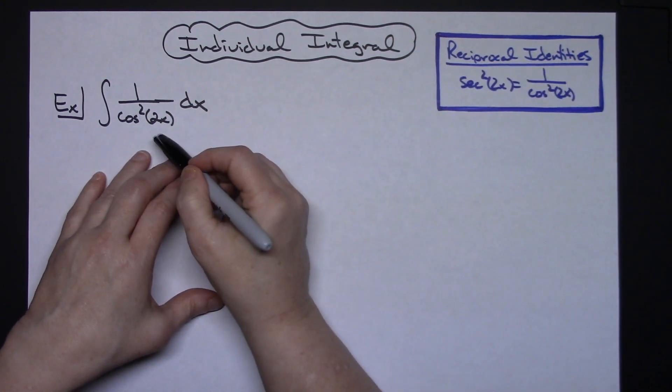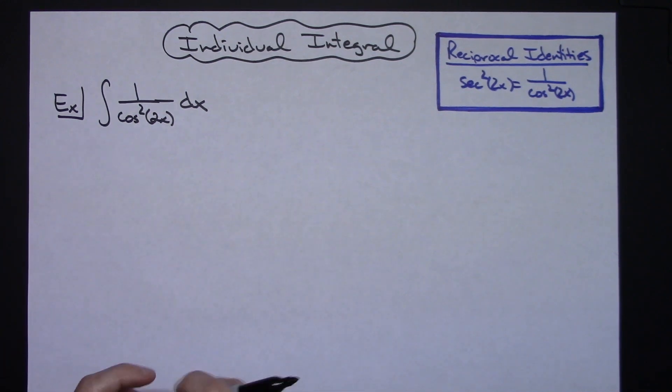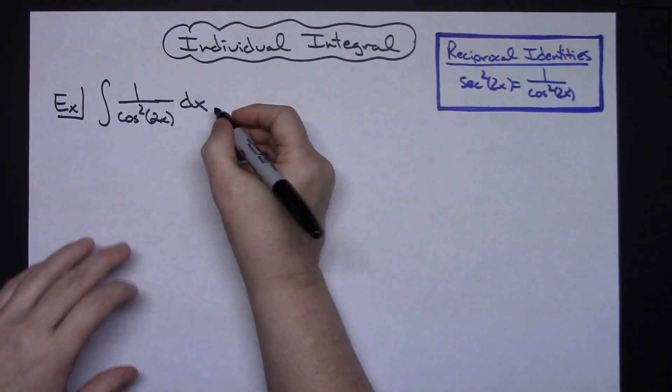So that substitution right there is going to be the first thing I'm going to do. Once I do that, then it will turn into a nice little u substitution integral.